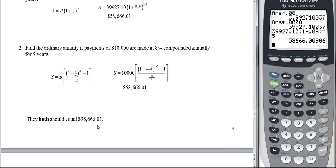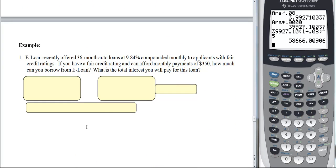Got an example. It says Easy Loan recently offered 36-month auto loans at 9.84% compounded monthly to applicants with fair credit ratings. If you have a fair credit rating and can afford monthly payments of $350, how much can you borrow from E-Loan and what is the total interest you will pay for this loan? So now, this loan is right when you walk on that lot and you borrow that money that is a lump sum that whoever you buy the car from, they get that amount of money. But you're going to have to pay E-Loan back for that money. So that's why I have to use the present value of an annuity formula.